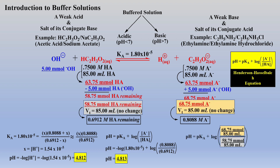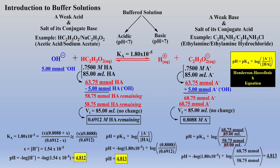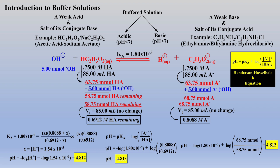The new molarities of our conjugate base and weak acid were calculated from new millimoles divided by total volume. Placing these expressions into the Henderson-Hasselbalch equation, we see that the total volumes cancel and the pH can be easily calculated. One can simply place the millimoles of conjugate base and weak acid after the stoichiometric calculation is completed directly into the Henderson-Hasselbalch equation.